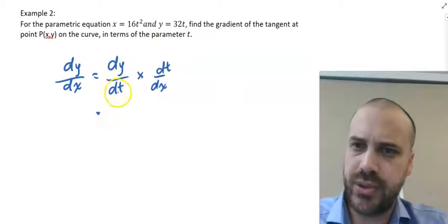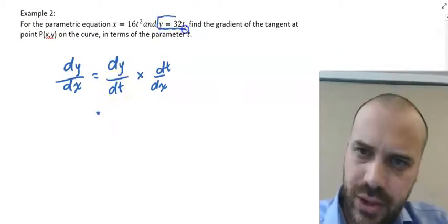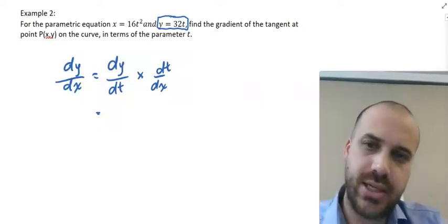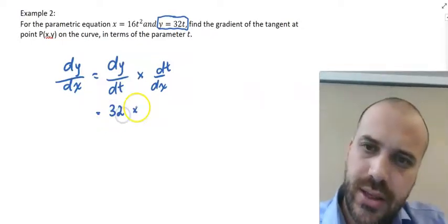Now, let's look at this. The derivative of y with respect to t. It's sitting right here for us. Y equals 32t. So the change in y with respect to t is just 32.